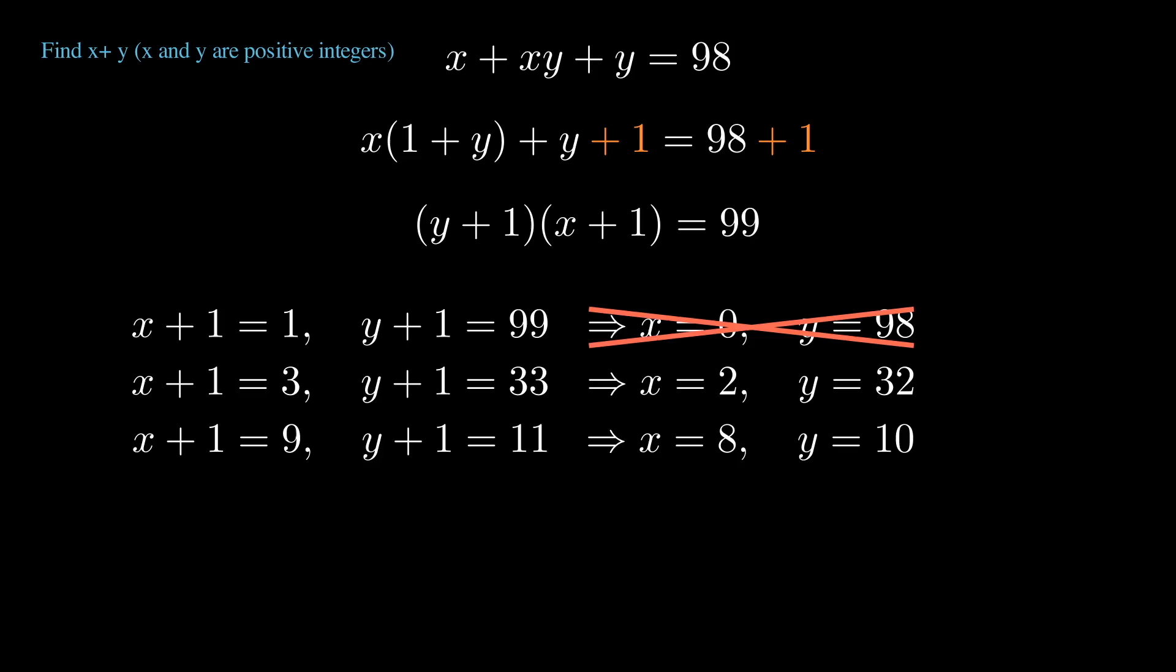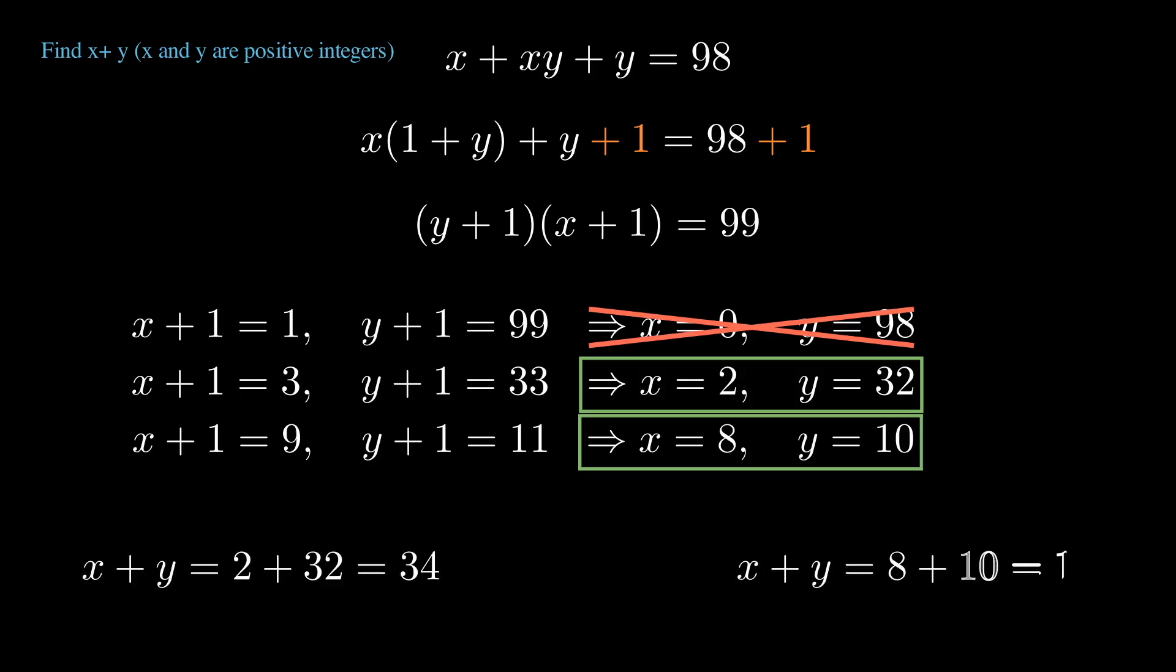And we'll have two possible solution sets. Now it's entirely possible that x could have been what y is and vice versa. Since we were only interested in x plus y, it doesn't really matter. We basically have a without loss of generality here.